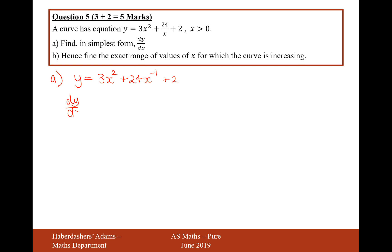Let's go ahead and differentiate it. The differential of 3x squared is 6x. You times the power to the front and reduce the power by 1. Times this power to the front and you'll get minus 24, and reduce the power by 1, x to the minus 2. And 2 just differentiates to 0.